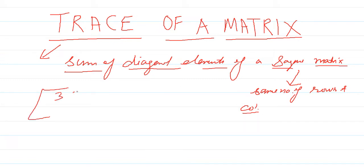For example, this is 3, 3, 3, 1, 2, 3 and 3, 1, 3. This is a 3 by 3 matrix. There are 3 rows and 3 columns.